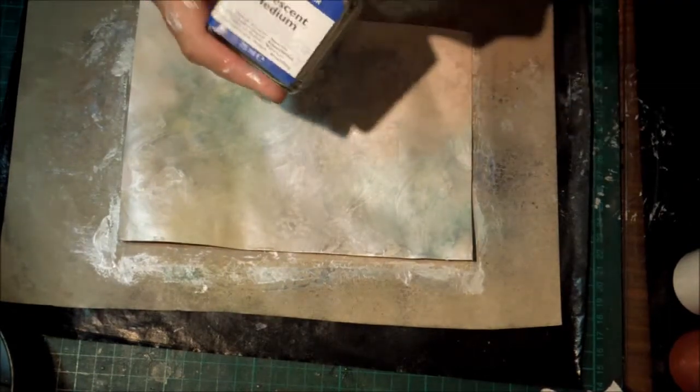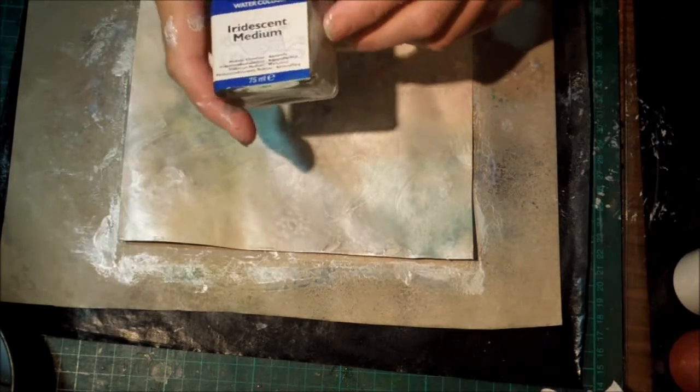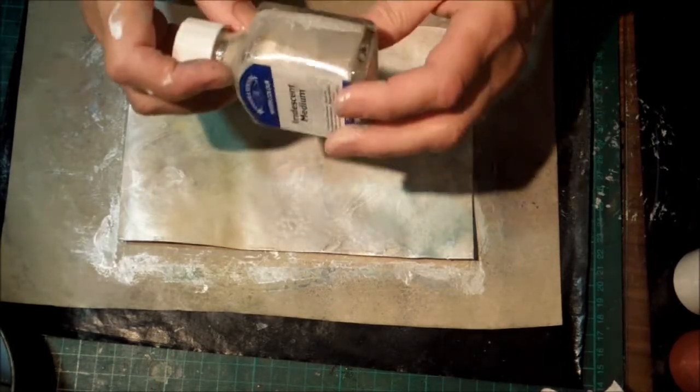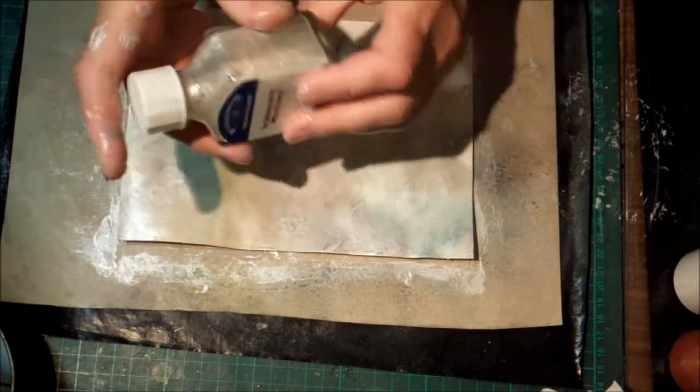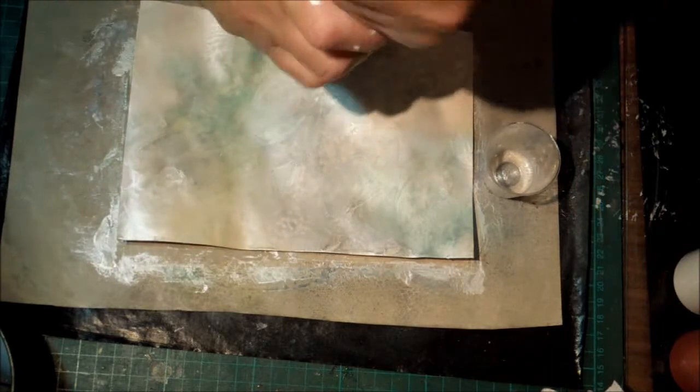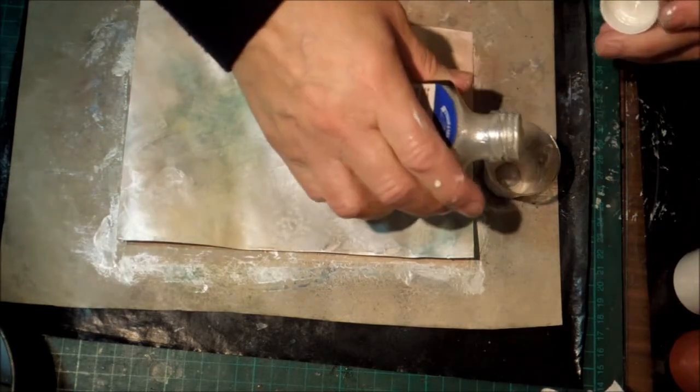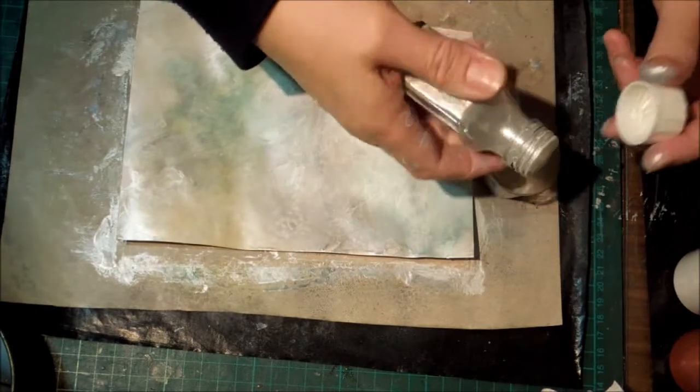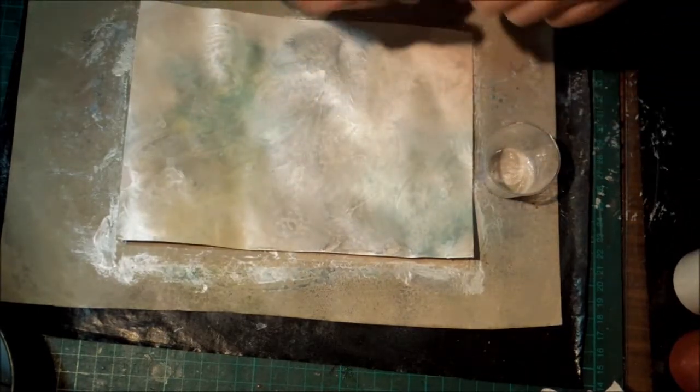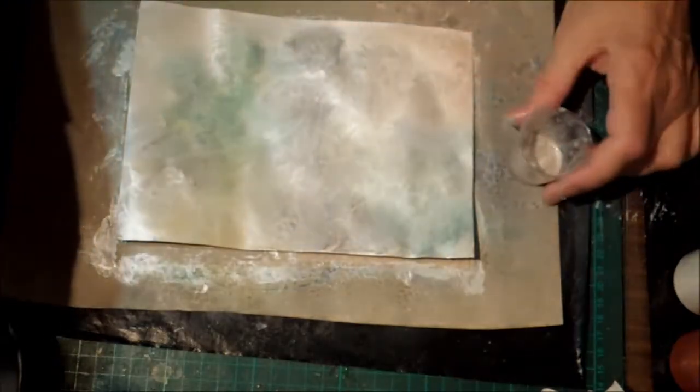Okay, so this is something you may or may not have: iridescent medium. I bought it at a local art shop. It's very readily available. It is super sparkly. I thought I was going to use it for making homemade glimmer mists, but it's actually a little bit thick and clogs the spray, so it didn't really work for that. But you couldn't really ask for more sparkle than that. It is lovely.